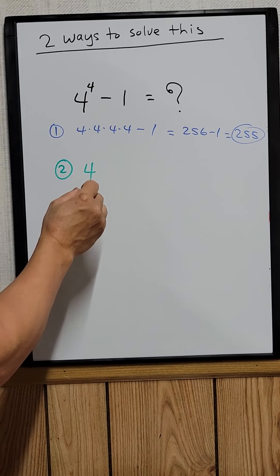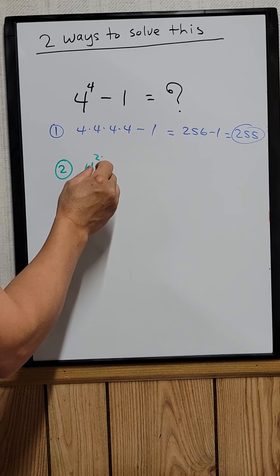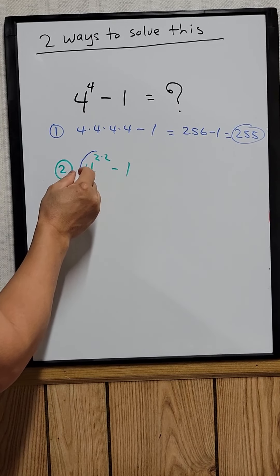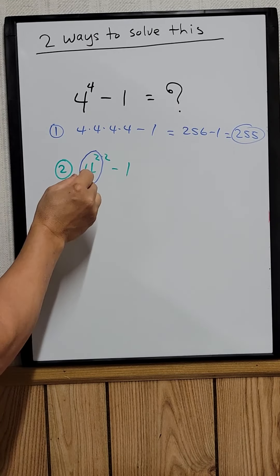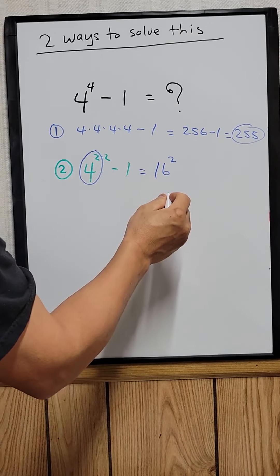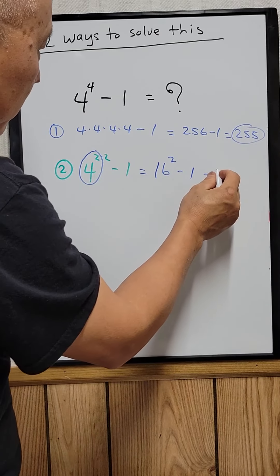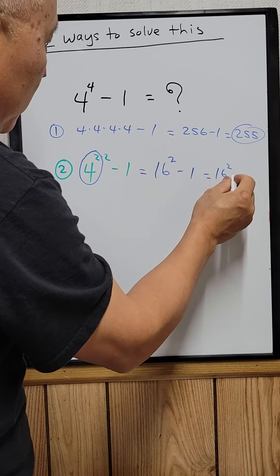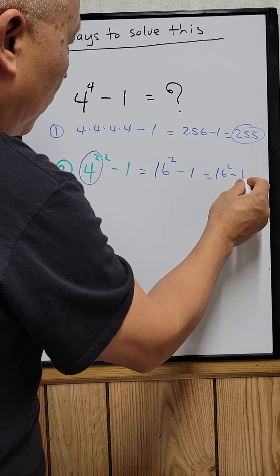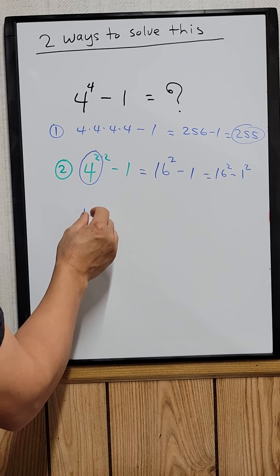So 4 to the 4 can be written as 4 to the 2, times 2, minus 1. 4 to the 2 is 16, squared, minus 1. And this could be written as 16 squared minus 1 squared. Let me rewrite this again.